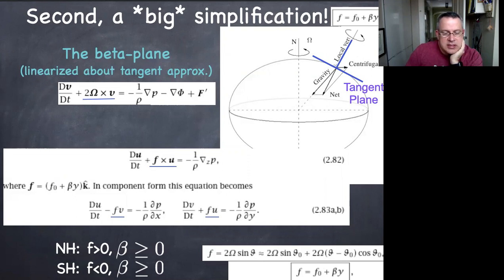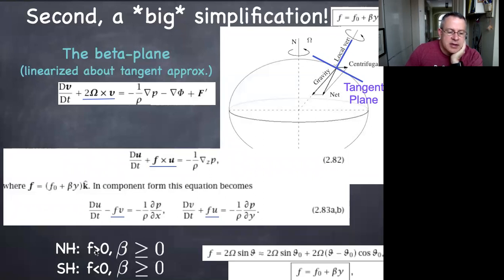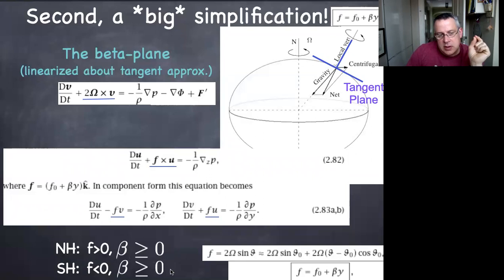The beta plane makes the north-south direction special relative to east-west. Moving toward the north pole increases positive f; moving toward the south pole decreases it. Looking at the equations, they look just like in the f-plane except we drop the zero subscript on f and have both the f₀ and β·y contributions in the Coriolis term, plus the pressure gradient force and any other body forces.